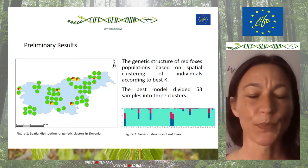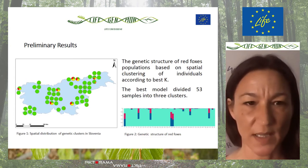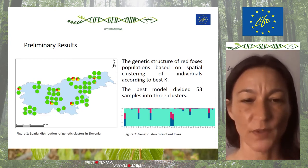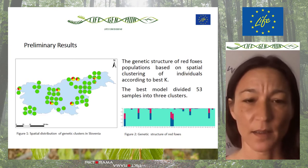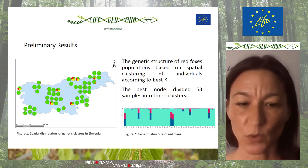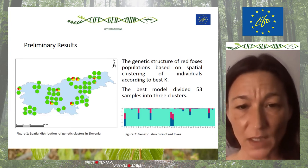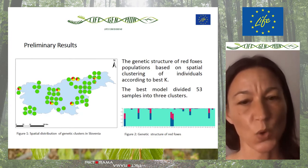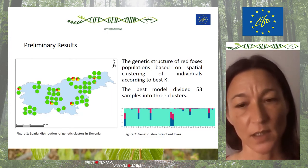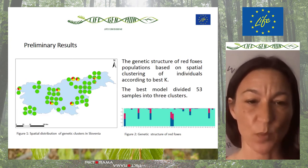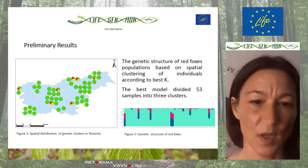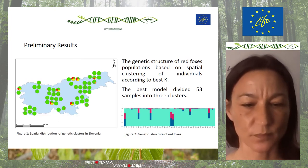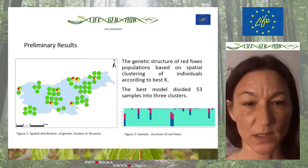Today I would like to present only the preliminary results because of the below-expected sample size, and we also could not conclude a lot. The genetic structure of foxes shows three clusters — the sample was divided into genetically diverse clusters — but most of them show the same genetic diversity.